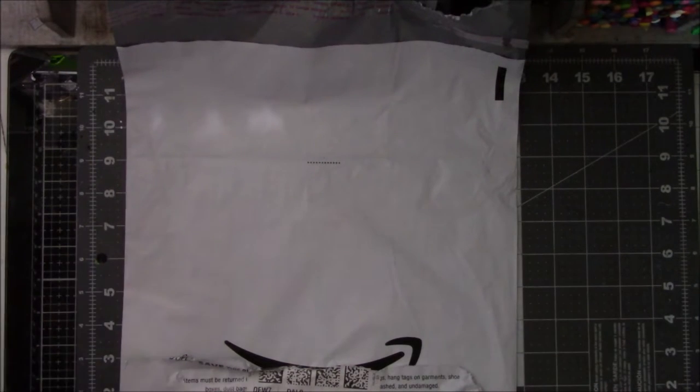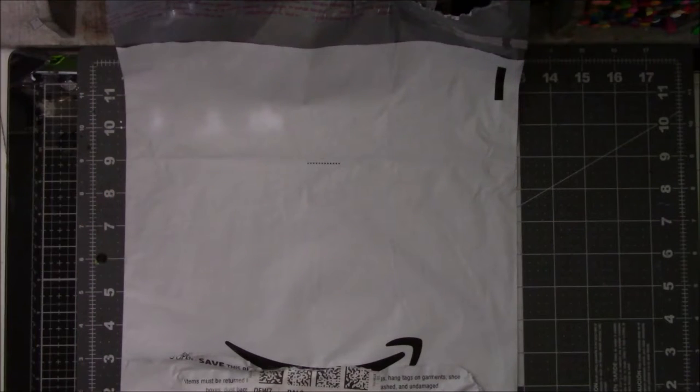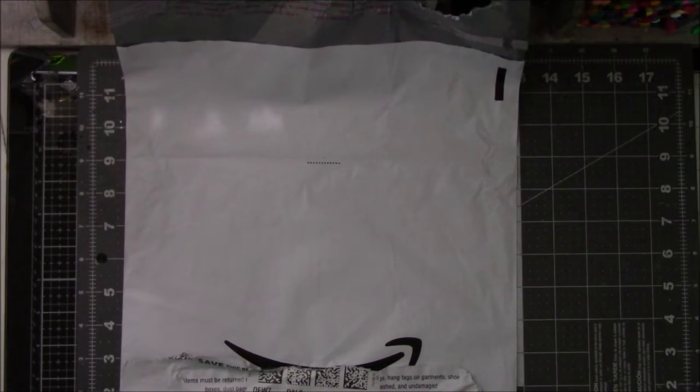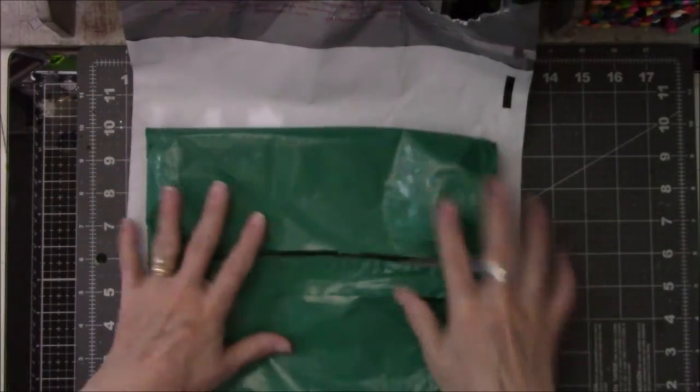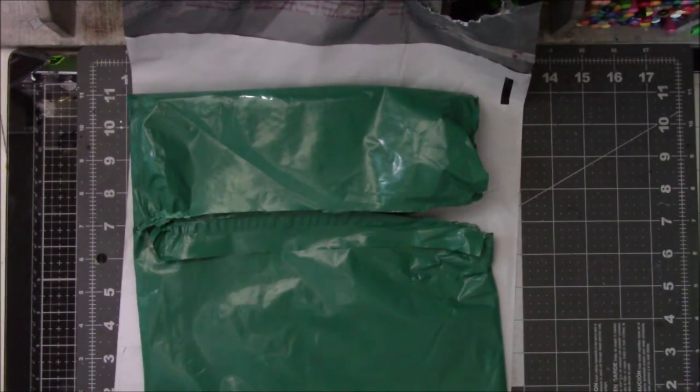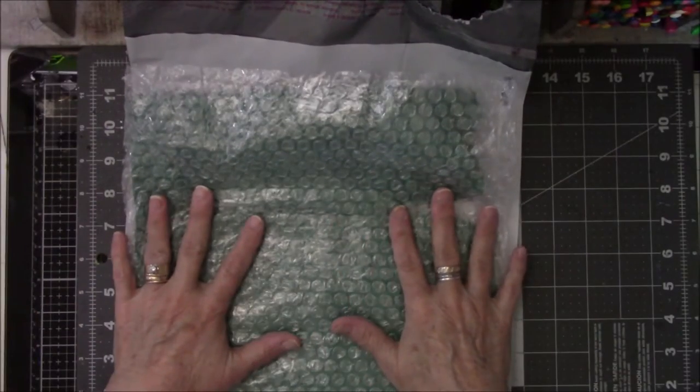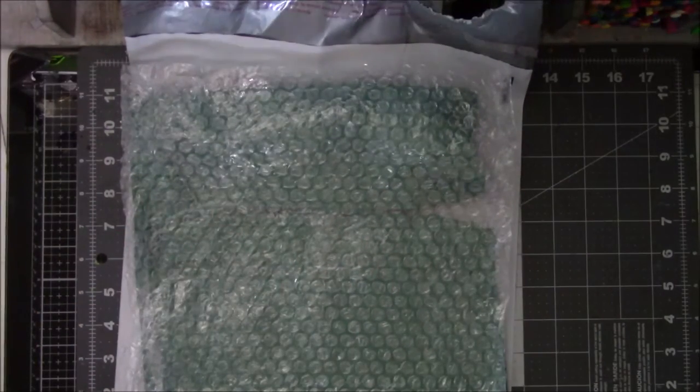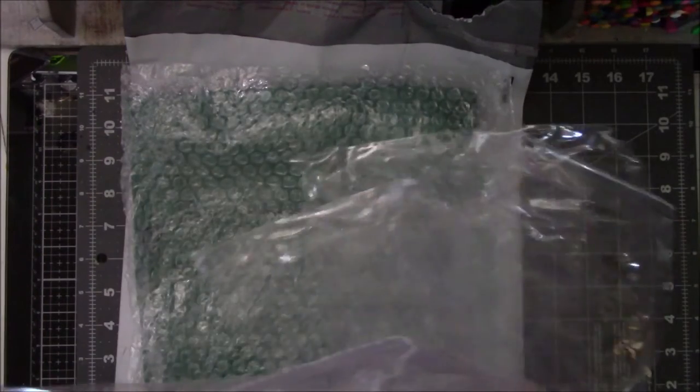So first comes the Amazon bag, then comes the green bag inside the Amazon bag which had all the spools wrapped up in plastic bubble wrap. Then each set of spools, I mean not each set but each section of spools.